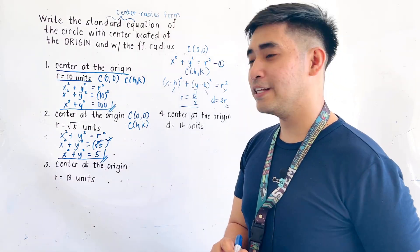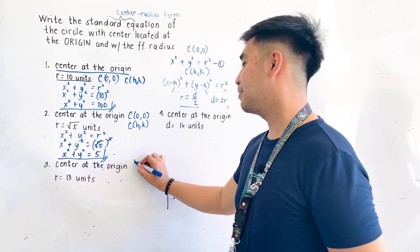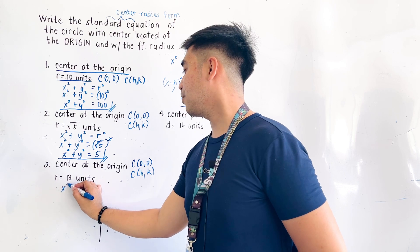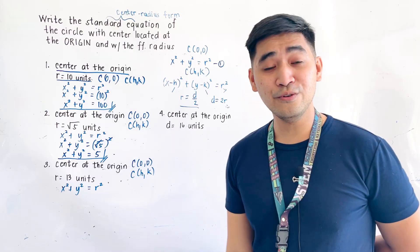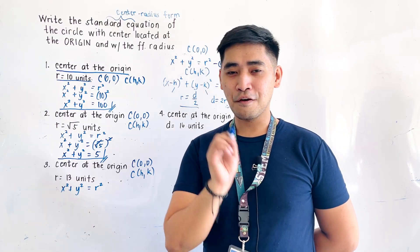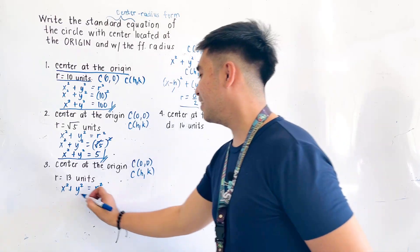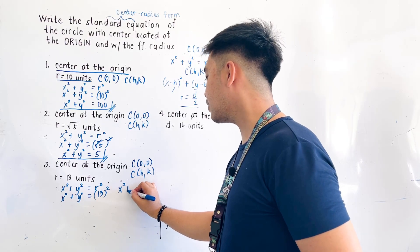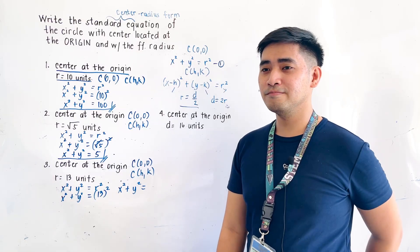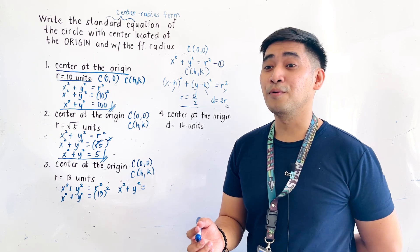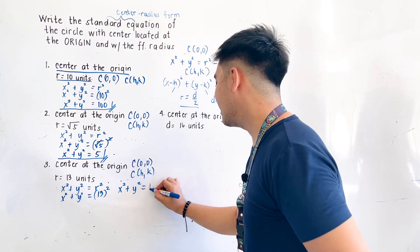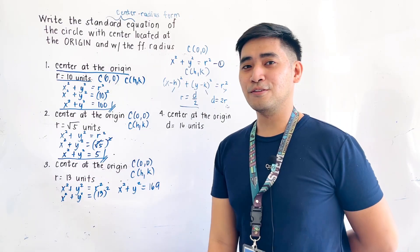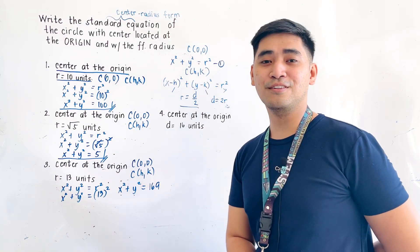For the third problem, the center is at the origin (0, 0), and we are given a radius of 13 units. Using x squared plus y squared is equal to r squared, we substitute 13: x squared plus y squared is equal to 13 squared. Simplifying, 13 squared is 169. Therefore, the equation of the circle is x squared plus y squared is equal to 169.